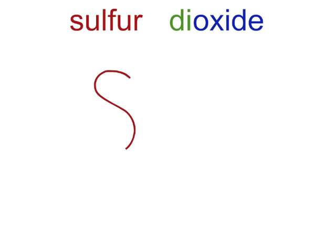Sulfur dioxide has sulfur and oxygen. The prefix di- means there are two oxygens. No prefix on the sulfur means there's just one.